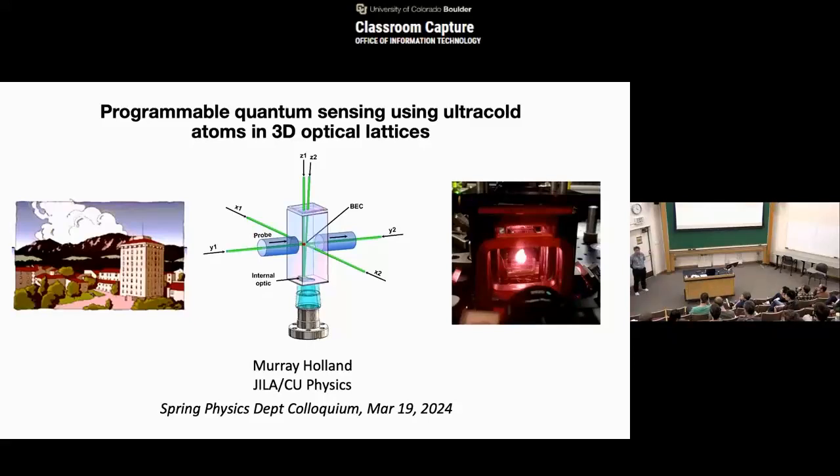There's very well-known work that came out of that, thinking about Heisenberg limited spectroscopy using sort of number states, or Dicke states. It was pioneering work. When he finished, he came right here to JILA and started working as a postdoc with Peter Zoller. He worked for a couple of years with Peter and then was hired right into the physics department.